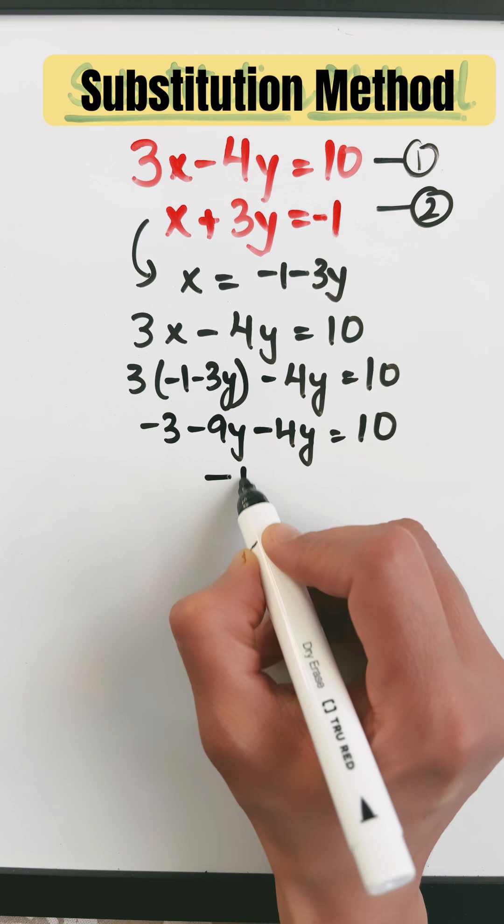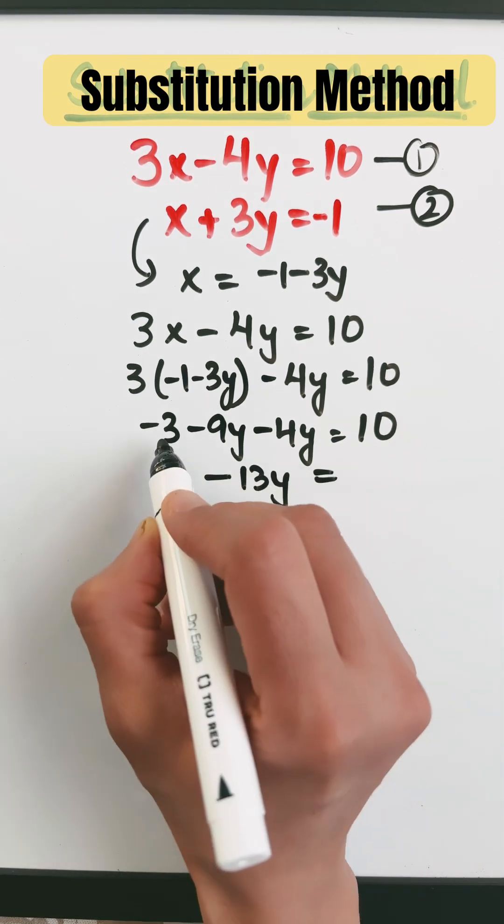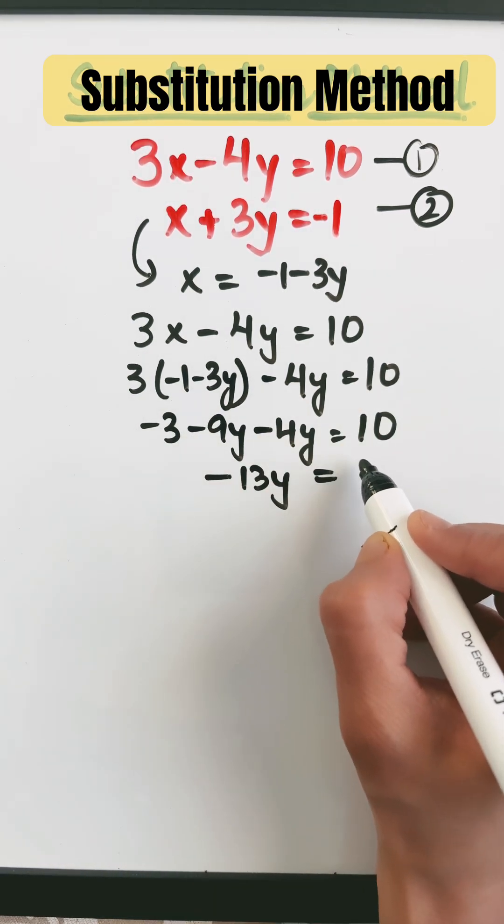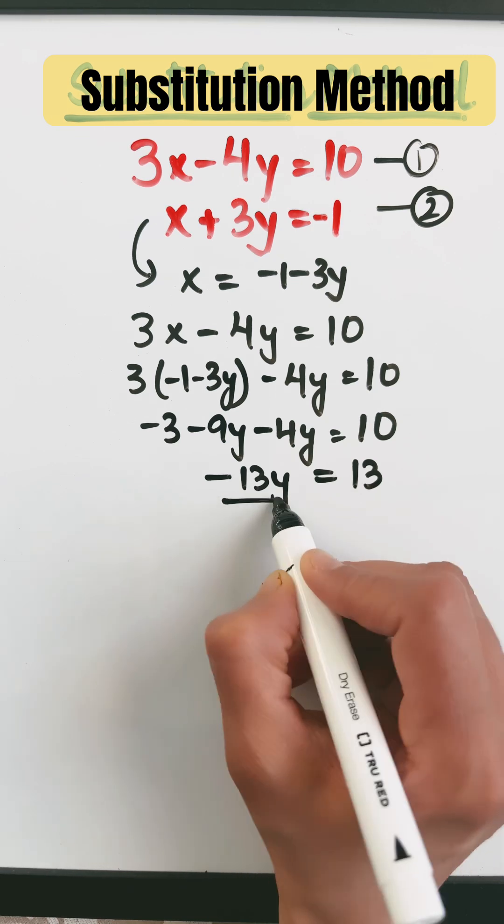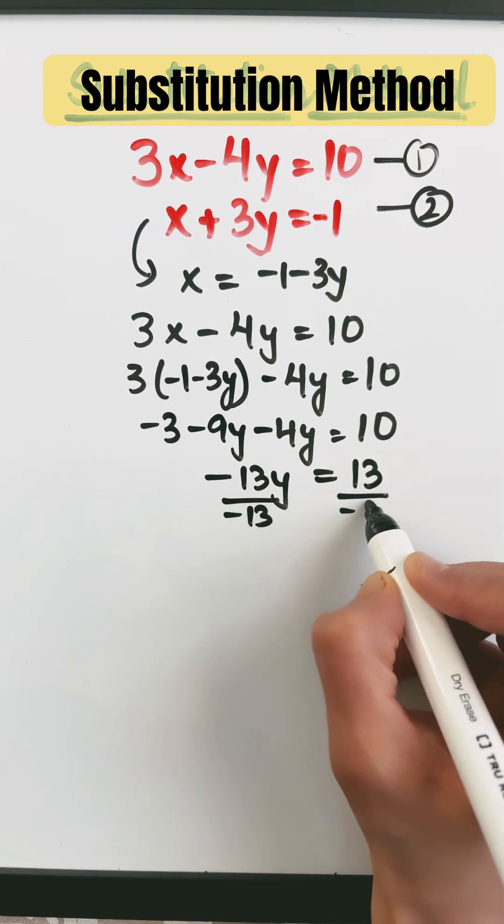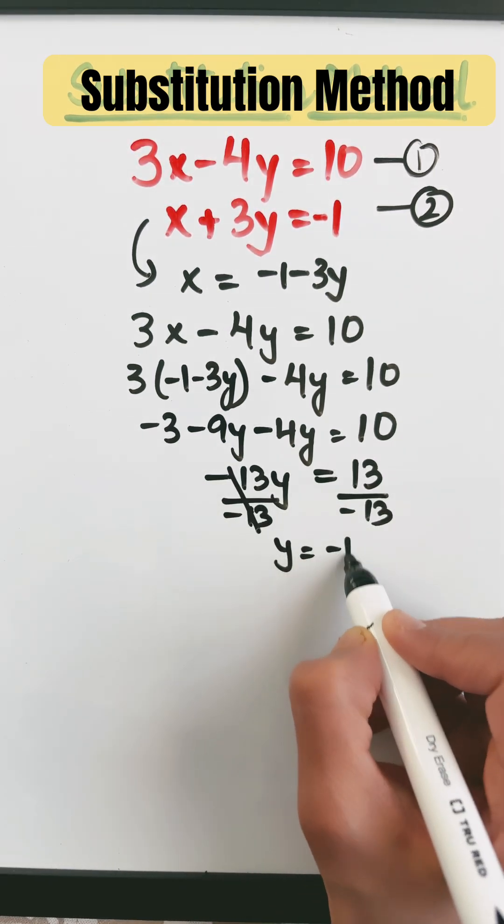Minus 9y minus 4y is minus 13y equals, this minus 3 when it goes to that side will be 10 plus 3 which gives me 13. Divide by minus 13 on both sides and I get the value of y as minus 1.